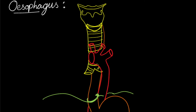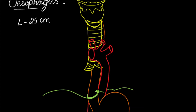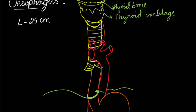Hello everyone. Today we are going to discuss regarding the esophagus, which forms the upper part of the GIT. The esophagus is a narrow muscular tube forming a food passage between the pharynx and stomach, and the length of the esophagus is 25 cm. Now let us see where the esophagus originates. There is the hyoid bone, then the thyroid cartilage, then the C-shaped cricoid cartilage, and our esophagus begins at the level of the cricoid cartilage.